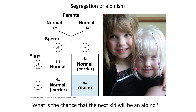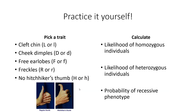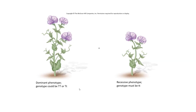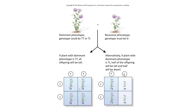We're also discussing a test cross, which is used when you don't know if an individual showing the dominant phenotype is homozygous or heterozygous. A test cross mates that individual with a homozygous recessive individual, and the offspring are used to determine the parental genotype. If the dominant parent was homozygous tall, all offspring will be tall and heterozygous. If it was heterozygous, half the offspring will be tall and half will be dwarf.